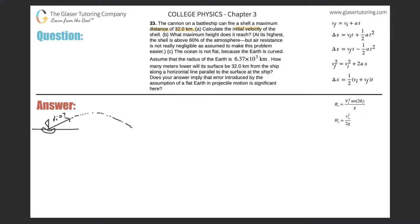Let's assume that the shell ends at the same height as which it starts. It says the shell can travel a maximum distance of 32 kilometers, so that distance from here all the way to the end should be 32 kilometers. You might ask: do I know the angle at which they released the shell? It doesn't say, but we actually do — because they said maximum distance.